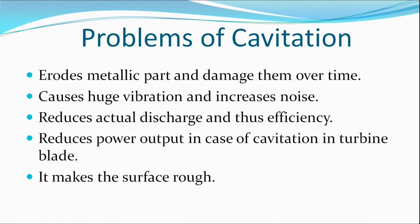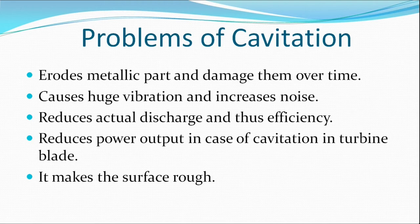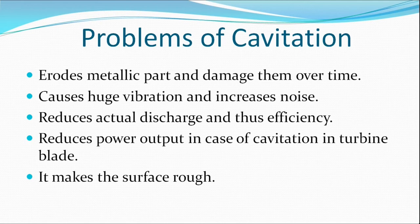Problems of cavitation: Cavitation erodes metallic parts and damages them over time, causing huge vibration and increased noise, which reduces efficiency. In the case of submarines, noise may hamper secret missions. Cavitation also reduces actual discharge and thus efficiency — the bubbles occupy volume with no discharge, so final discharge is decreased. In turbines, cavitation reduces power output because bubble formation means less water hits the turbine blade, causing less energy transfer, less rotation, and less power output. Cavitation also makes the surface rough, as seen in the previous picture.